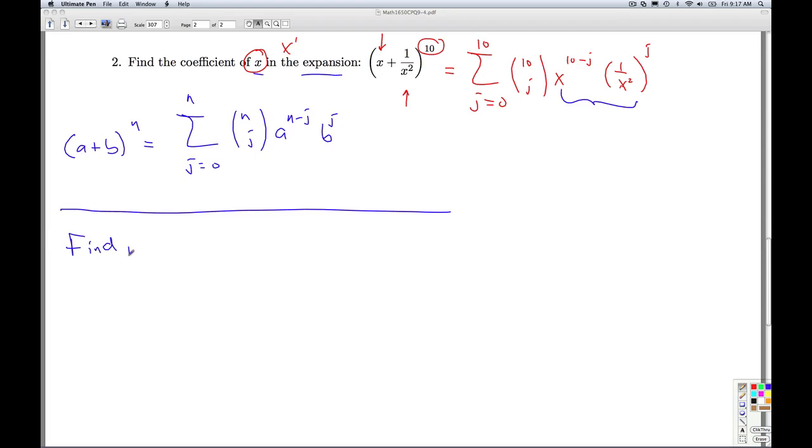So that's how we proceed. So we need to find j so that x to the 10 minus j, 1 over x squared to the j, is equal to just x to the first power. So I go through using properties of exponents. 1 over x squared is the same as x to the minus 2. So I get same bases, add the exponents. I have 10 minus j plus negative 2j is 10 minus 3j is equal to x, which is x to the first.